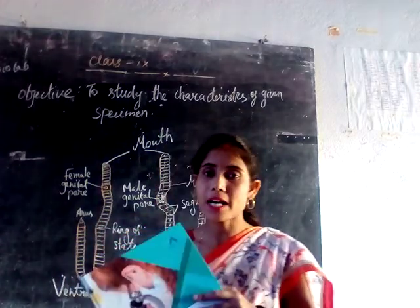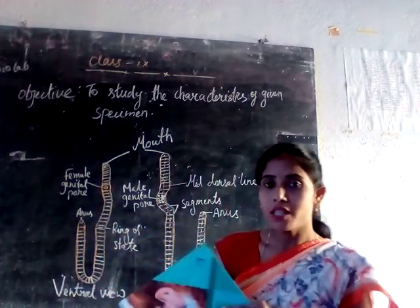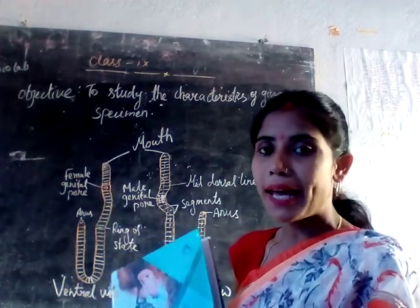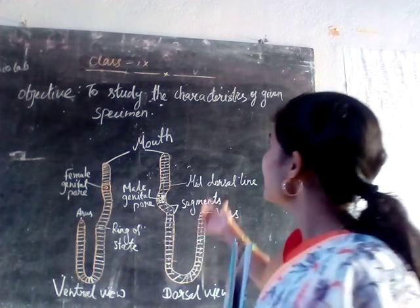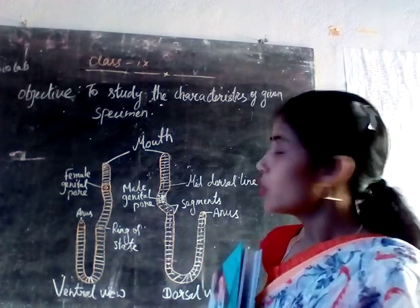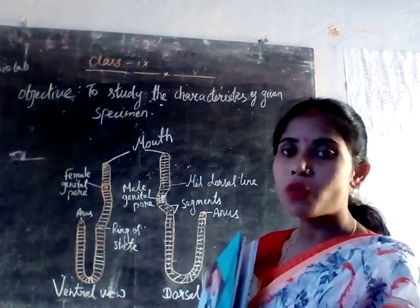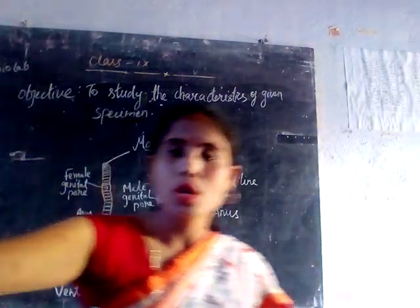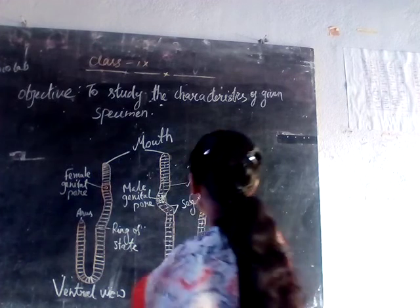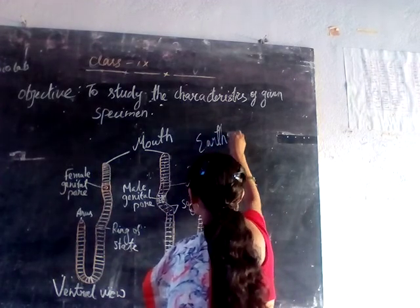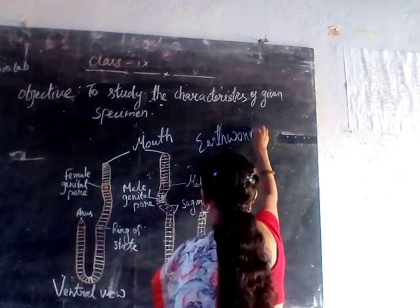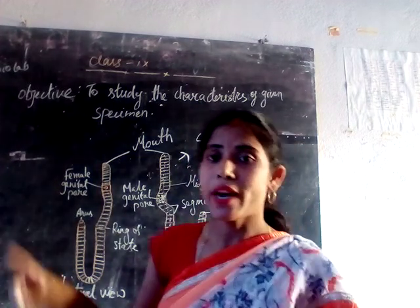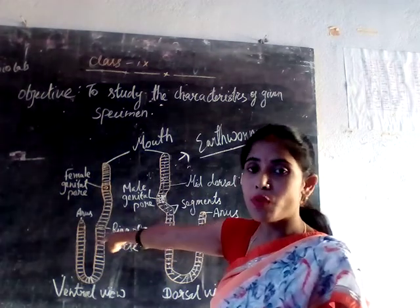Good morning to all the Class 9 students. In this video you are going to see that we have performed an activity called 'study the characteristics of the given specimen.' The given specimen we have used here is your earthworm — this is your earthworm which we have used in order to study it. So it's a figure of your earthworm, and we have used two different characteristics here.